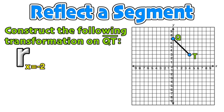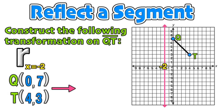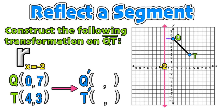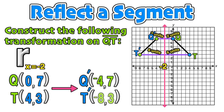For our next example, we are going to reflect a line segment. Our line of symmetry is x equals negative 2, a vertical line equation. We'll write down the coordinates of the endpoints Q and T. To find the coordinates of the image Q' and T', we count how many units each endpoint is from the line of symmetry: point Q is 2 units away, and point T is 6 units away. We repeat those distances on the other side of the line of symmetry, giving us Q' at coordinates (negative 4, 7) and T' at (negative 8, 3), and then construct the reflected line segment.